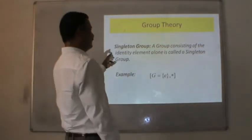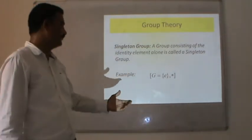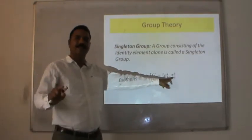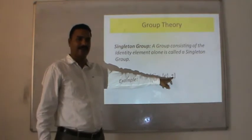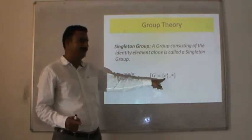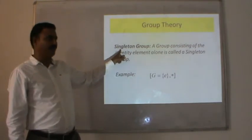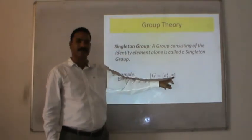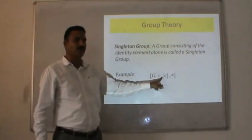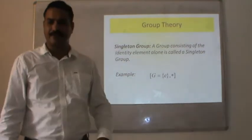Singleton group: a group consisting of the identity element alone is known as a singleton group. For example, G = {0} with addition forms a group since 0 alone satisfies all group properties, making it a singleton group. If the operation is multiplication, then we replace 0 with 1, forming a multiplicative singleton group with the single element {1}.